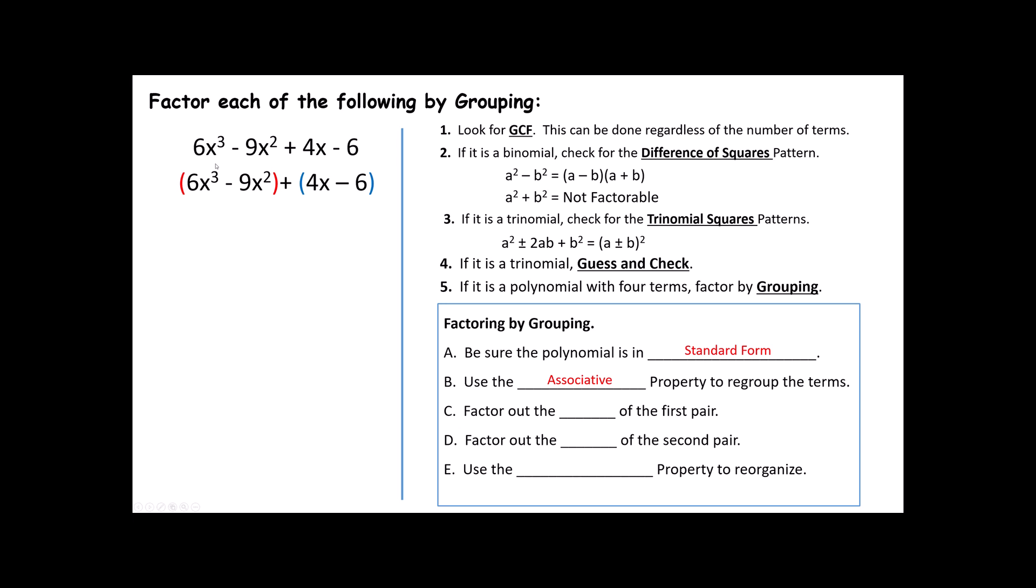And then we're going to use the associative property to regroup the terms. The associative property says that if all you have is one long string of addition, you can regroup that addition any way you want. Now notice this does have subtraction, but we're thinking of this as being plus negative 9. This is subtraction, so we're thinking of this as being plus negative 6. And so as long as we're keeping that minus sign in the same position, we can use this associative property. Notice I put the first two terms together, and I put the last two terms together.